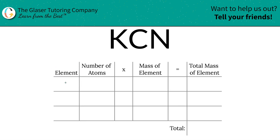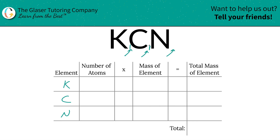So the first thing I'm going to do is write the elements I see. We got potassium, we got carbon, we got nitrogen. Next is to take into account the number of atoms, and that's where the subscripts come into play. If you don't see any numbers down there, it is assumed to be a one. So we got one potassium, one carbon, one nitrogen. Easy peasy.